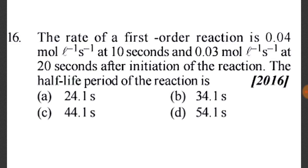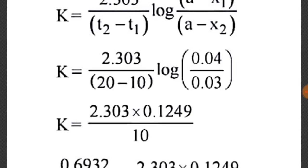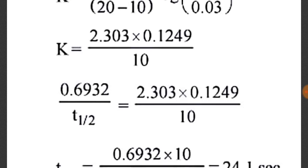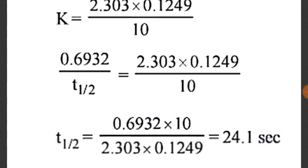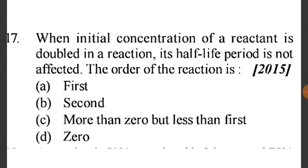For a first order reaction: k = 2.303/(t₂ - t₁) · log(rate₁/rate₂) = 2.303/10 · log(0.04/0.03) = 2.303 × 0.1249/10. Then t½ = 0.693/k = 24.1 seconds.